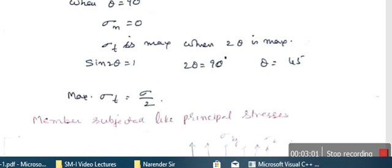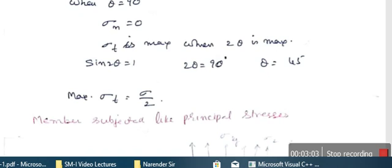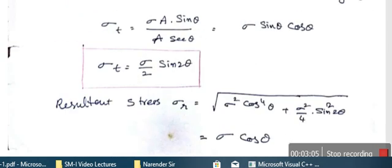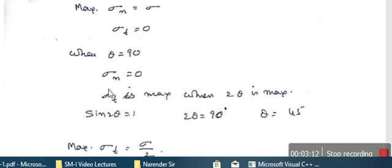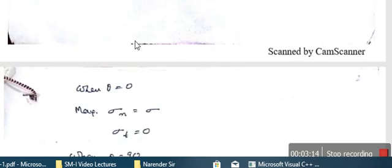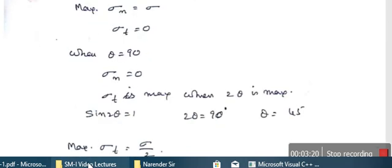Whenever theta is equal to 0, we substitute in sigma_n. Theta equal to 0 means cos squared 0; cos 0 is 1, so sigma_n equals sigma. That is the condition. And in sigma_t, theta equal to 0 means sin 2 theta is 0, therefore sigma_t equals 0.